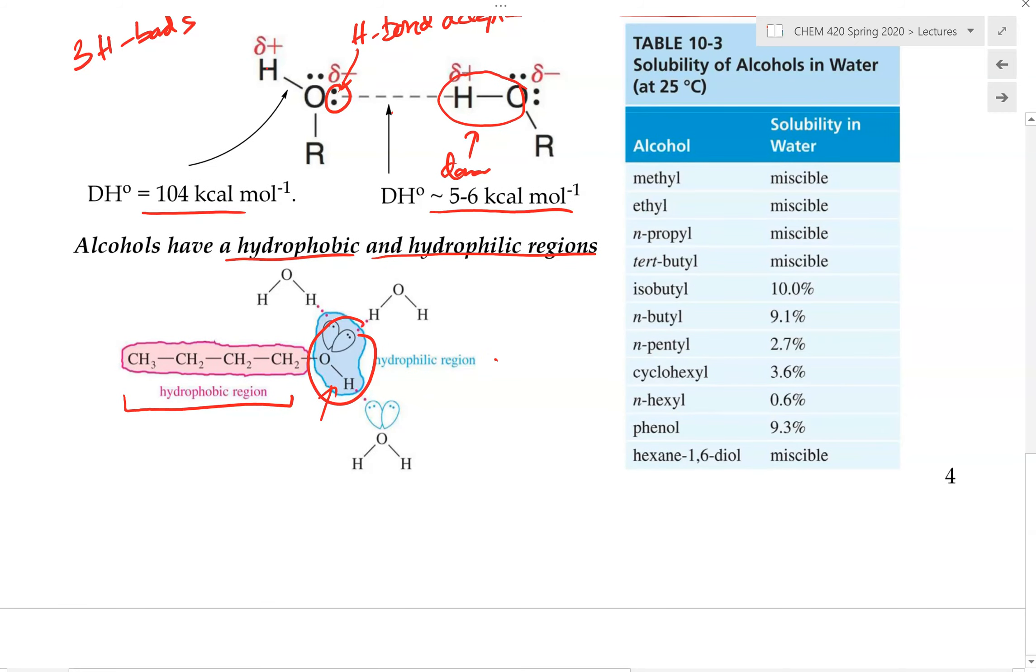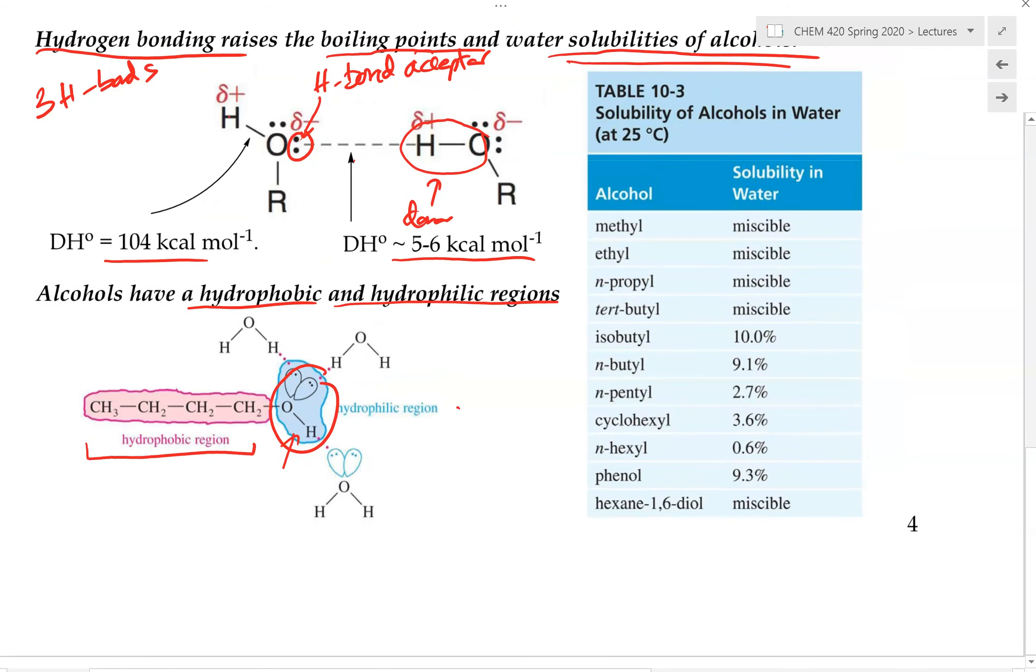These are some examples of common alcohols and their solubility in water at 25 degrees Celsius. When the alcohols are very short, for example four carbons or shorter, this is when they will have complete solubility in water. They will be miscible in water, meaning that they have infinite solubility in water.